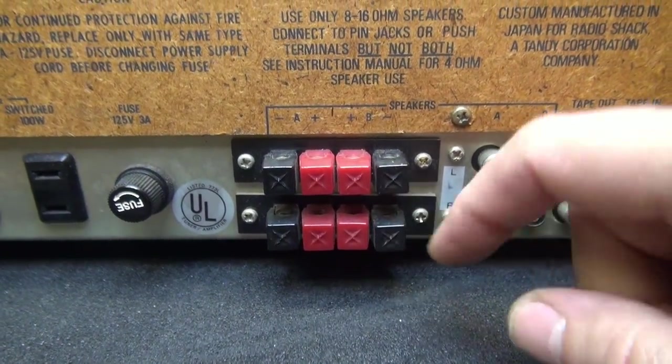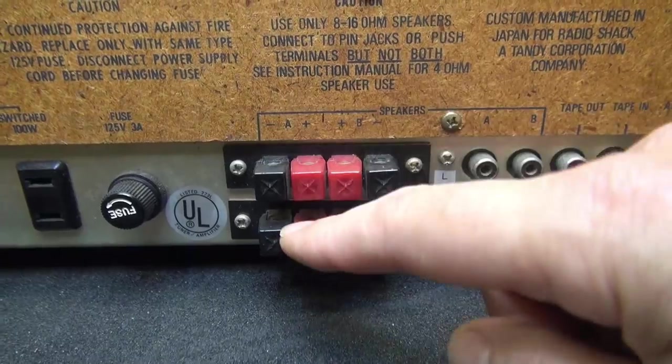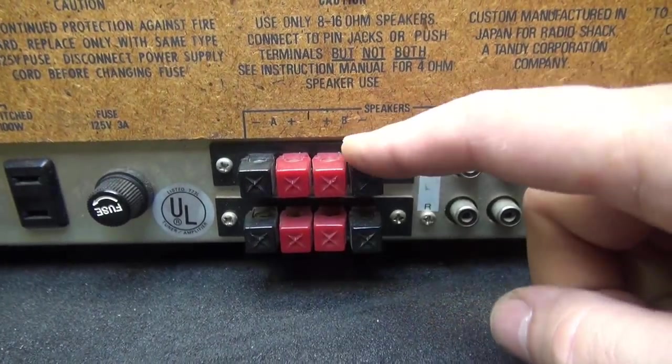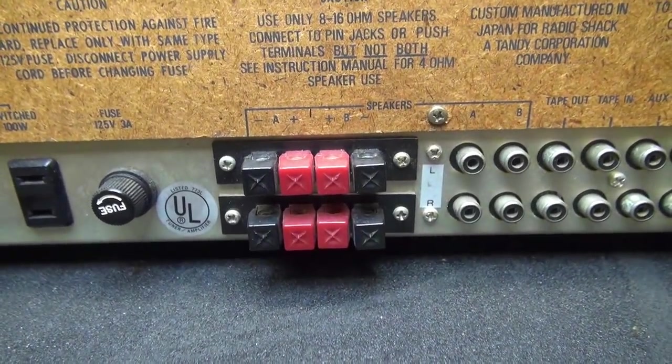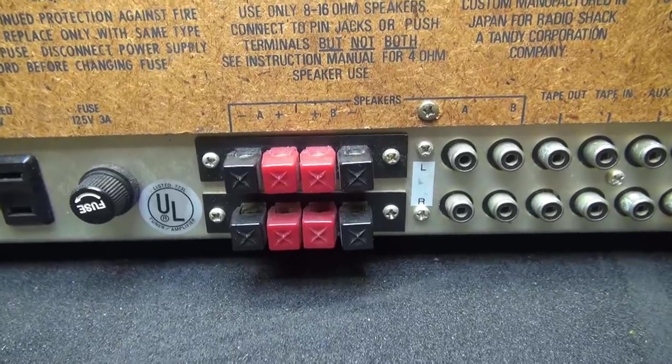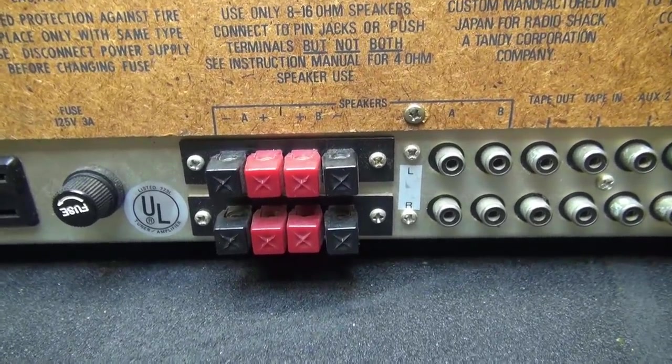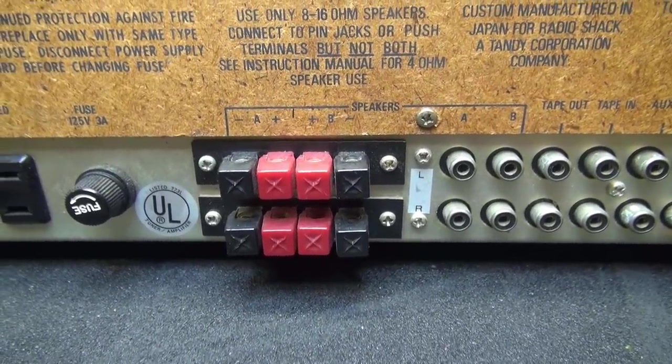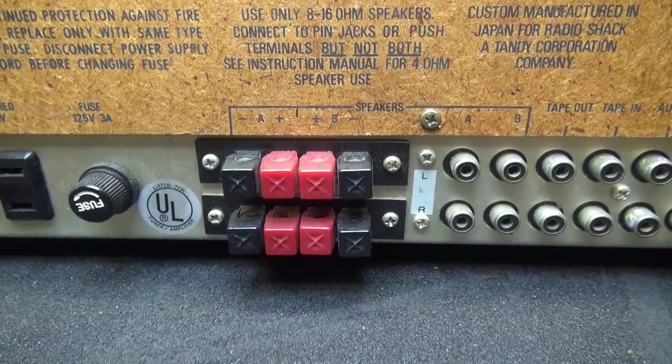What you have to be careful with when you hook up your speakers is you would normally think that this would be system A left and right, and then B. No, it's not that way. It's actually A left and right up and down, and B left and right. So sometimes you get these things and you hook up your speakers and you have no output.